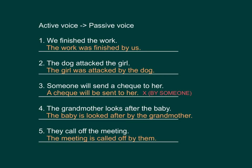Now here comes our exercise time. Change these sentences into passive voice. Number one: we finished the work — the passive voice should be: the work was finished by us. Number two: the dog attacked the girl — the passive voice: the girl was attacked by the dog. Number three: someone will send the check to her — the passive voice: a check will be sent to her. No need to write by someone.